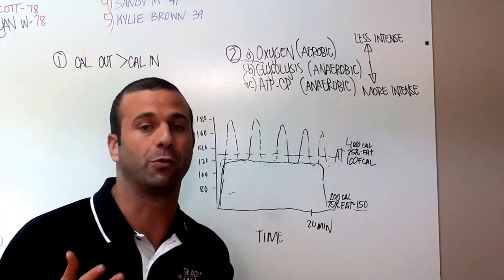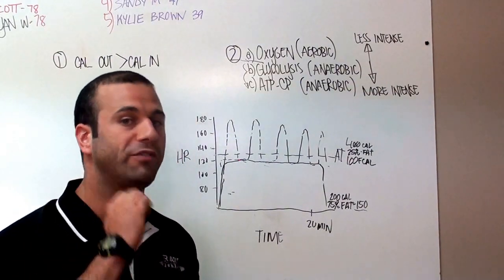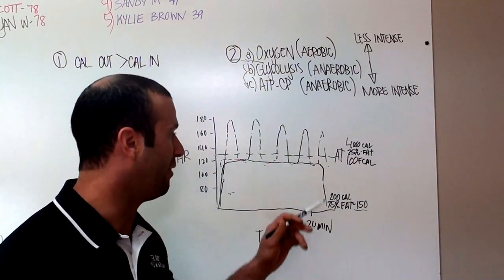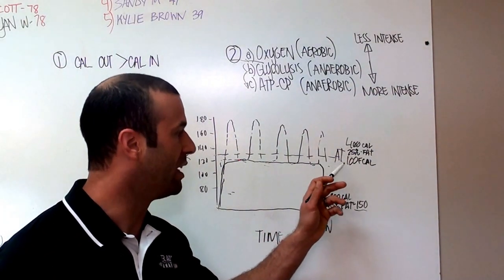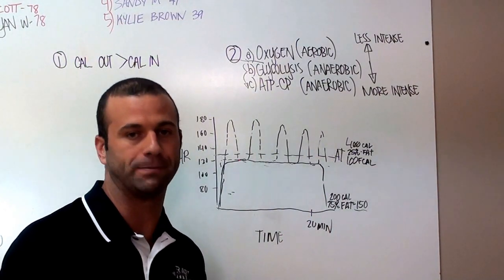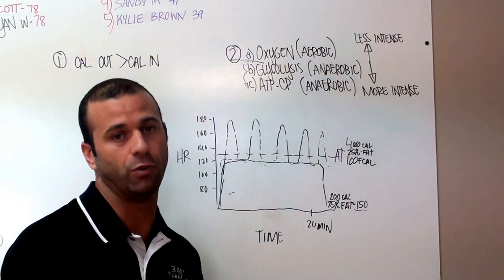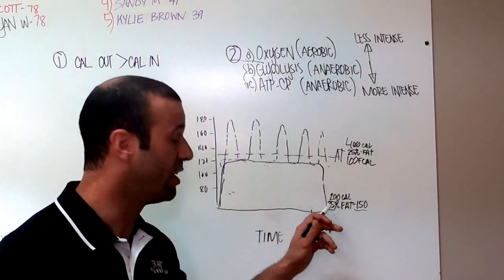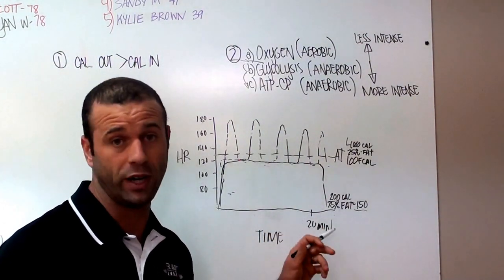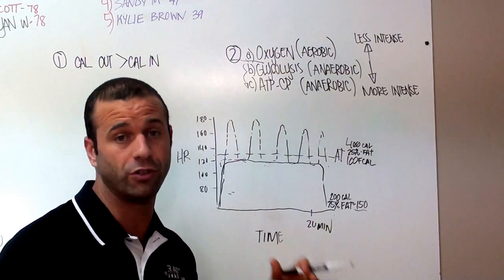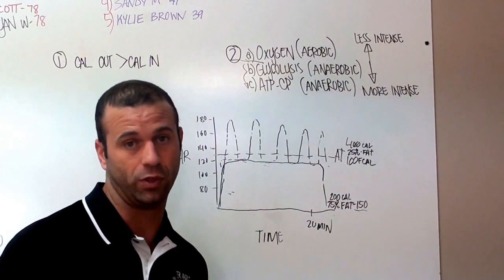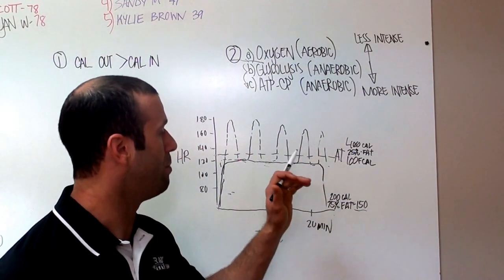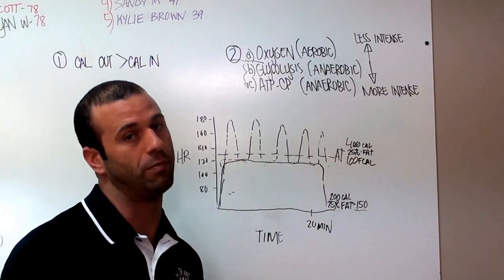We get a big afterburn effect. For the next 24 to 48 hours after he gets off that treadmill, he is burning tons more calories than he would if he just did steady state cardio. Here, steady state cardio, 20 minutes, you get off the treadmill. When you're done, you're done. That's it. That's even more added benefit to doing the interval method.